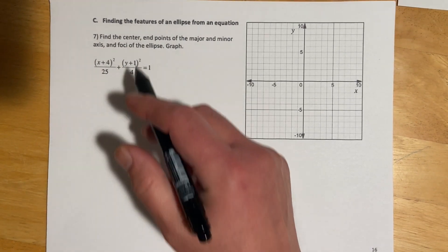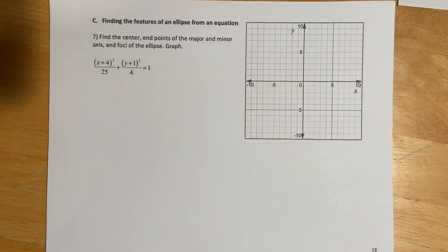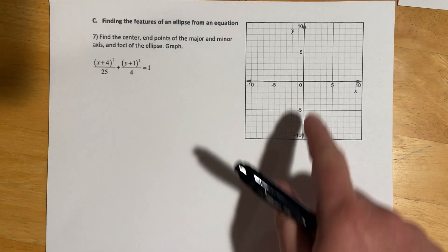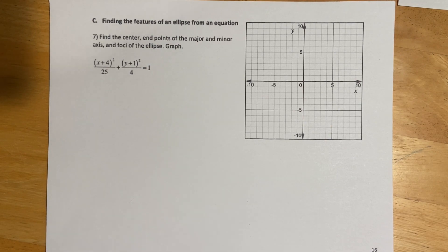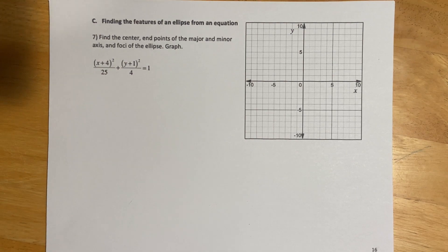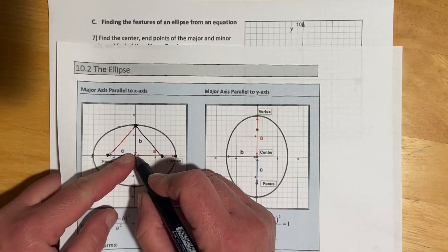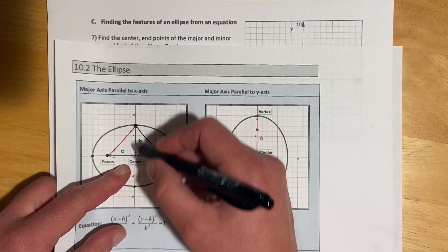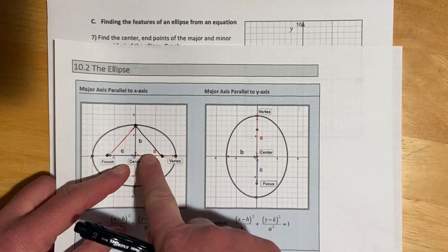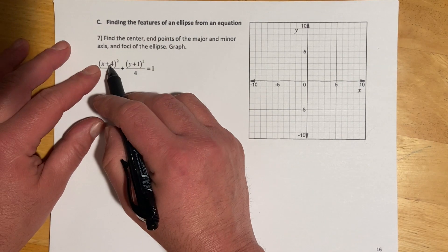So for this one we're asked to find the center, the endpoints of the major and minor axes, and the foci of the ellipse, and then graph. If on the homework these often do not come with a graph, I always graph them. For me, that's the easiest way to find all this stuff, is just to look at the picture and go, okay, it's right there. You can also do this by just using the definitions. Our center is pretty easy to spot, it's right there, it's our h,k.